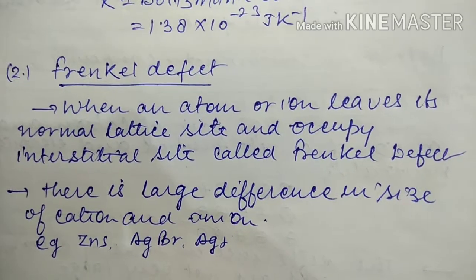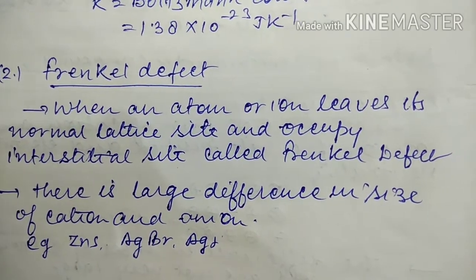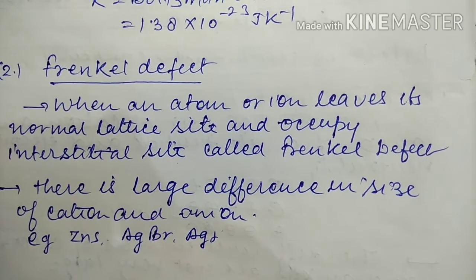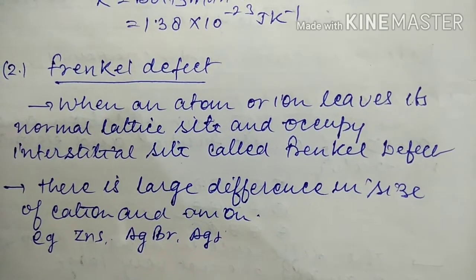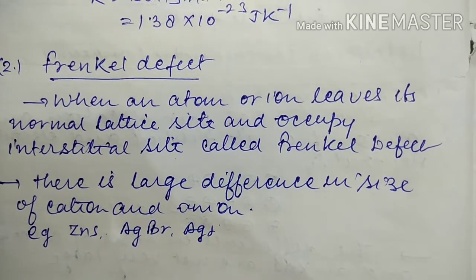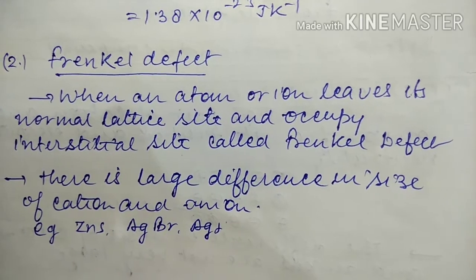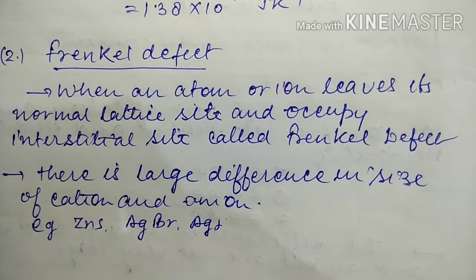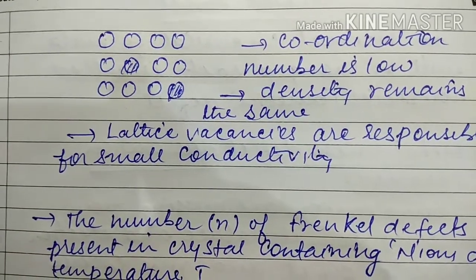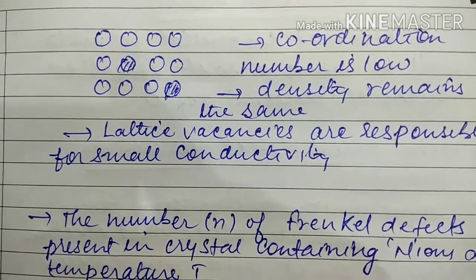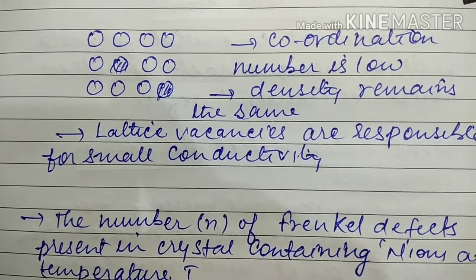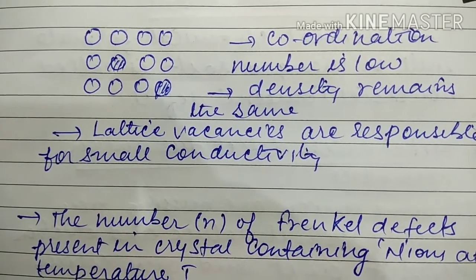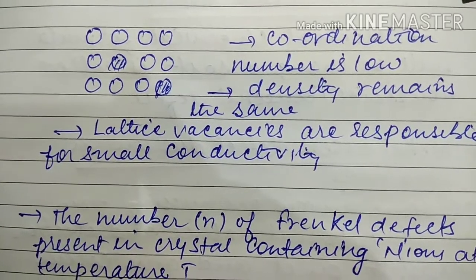Next is the Frenkel defect. Remember: in Frenkel defect there is no change in density — density remains constant. When an atom or ion leaves its normal lattice site and occupies an interstitial site, it is called a Frenkel defect. There is a large difference in size between cation and anion, as in ZnS, AgBr, AgI. Coordination number is low and density remains the same.